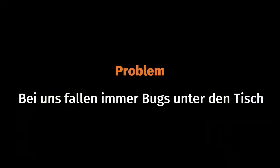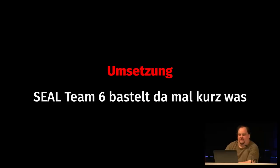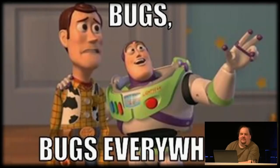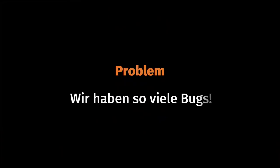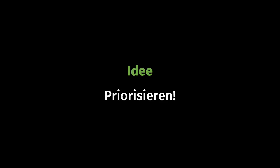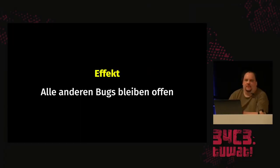Next problem: we always lose the bugs. The solution is a bug tracker, and in practice SEAL Team 6 quickly hacks something together. The effect you get is bugs everywhere. And an anti-pattern I see is priority tagging — something like 'severity blocker' or 'security' — and the effect of that is that everything else is left open. You can see that again and again.